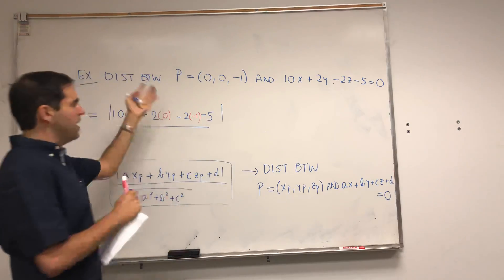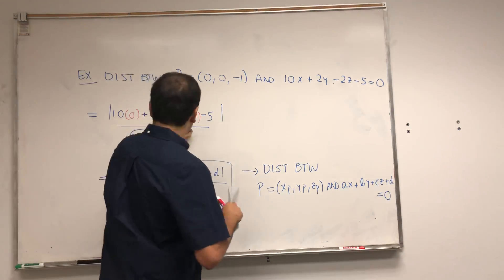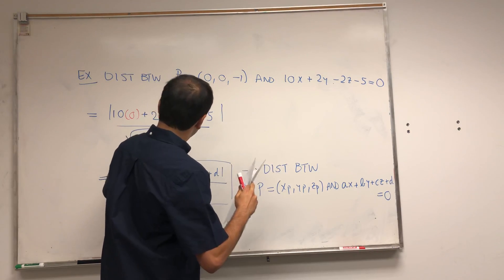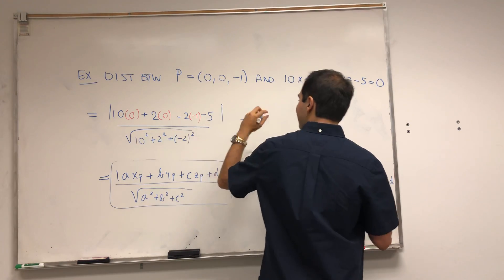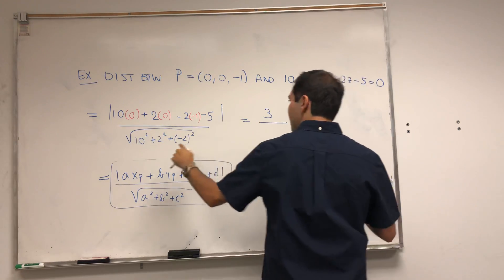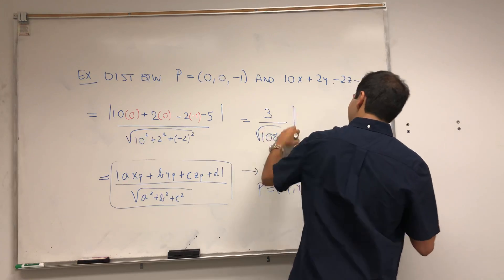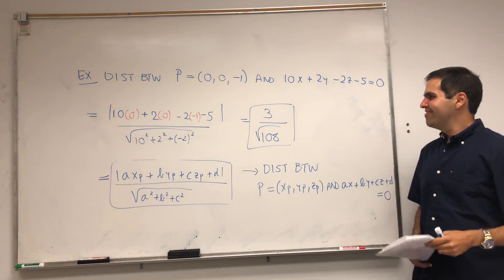And you divide it by the length of the plane: √(10² + 2² + (-2)²). I believe that gives you, so 3 - 5, so -3 in absolute value is 3, and that becomes √108.